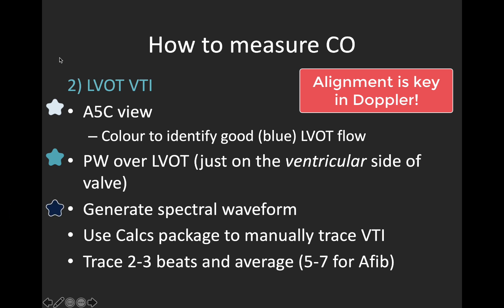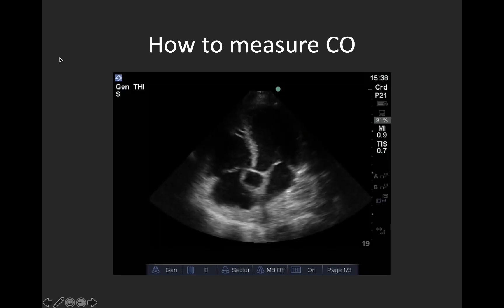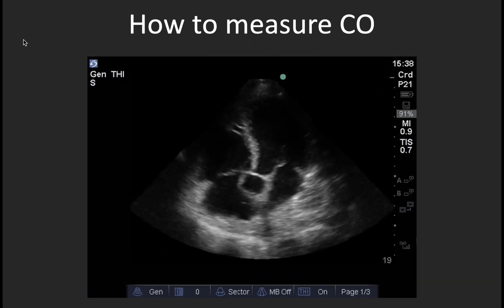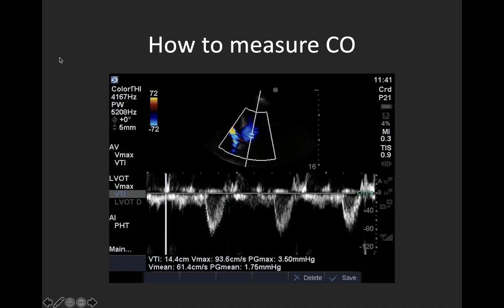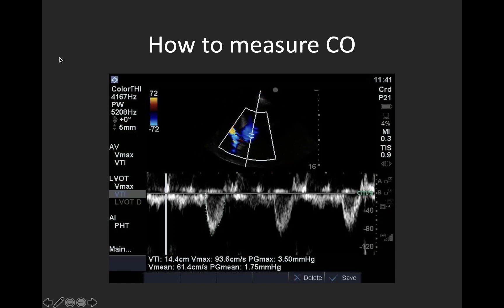Next, we generate a spectral waveform, freeze it, and then use the calcs package — which comes on almost all machines — to manually trace the velocity time integral. Your waveform should look like a bright outline with black inside; this is called the modal velocity, and we want to trace at the black-white interface. Ideally, trace two to three beats and average them for your best reading, and more if the patient is in atrial fibrillation. Here is an apical 5-chamber view nicely showing the LVOT. We place our PW gate within the LVOT, just on the ventricular side of the aortic valve. Colour was used here — we have a nice strong blue signal in the outflow tract. The PW gate should be between three and five millimetres generally. We've generated a nice clear VTI waveform that has been manually traced to get a VTI of 14.4 centimetres for this patient.